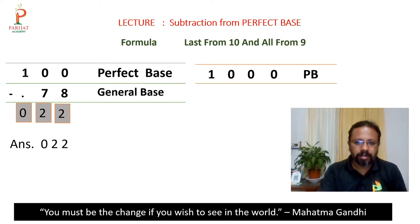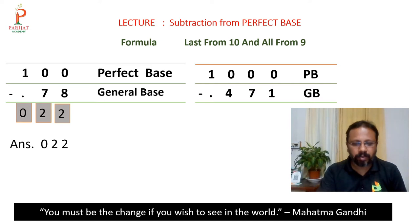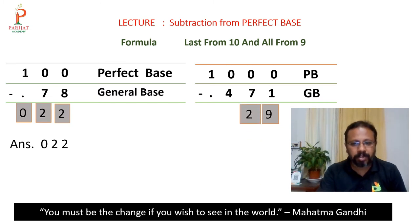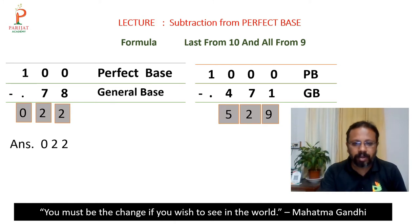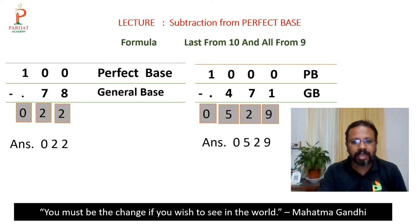Let's try one thousand minus four hundred and seventy-one. Complementary of one by base ten will be nine. Complementary of seven by base nine will be two. Complementary of four by base nine will be five. And one minus one (the dot) equals zero. So our final answer is zero five two nine — that is 0529.